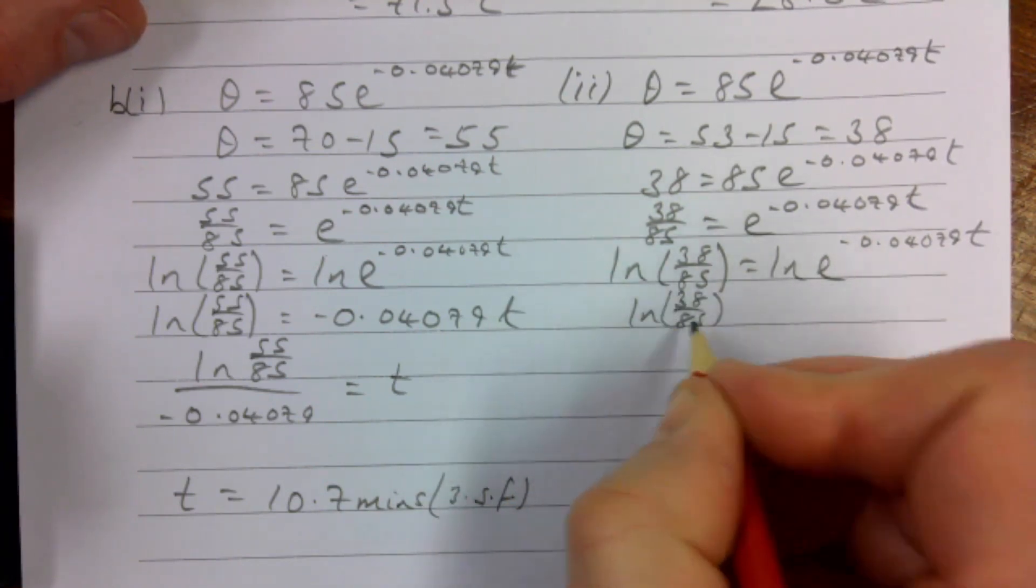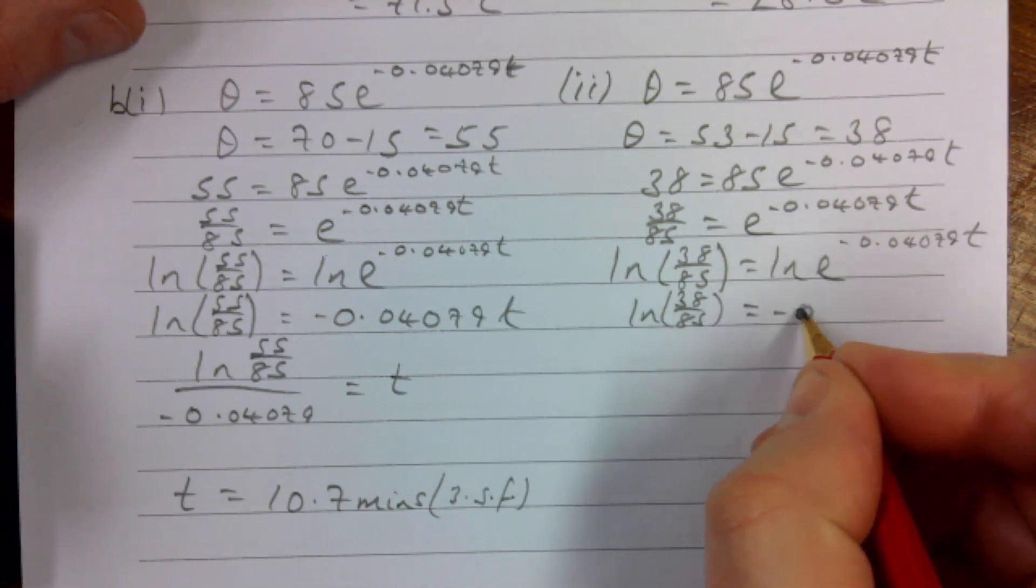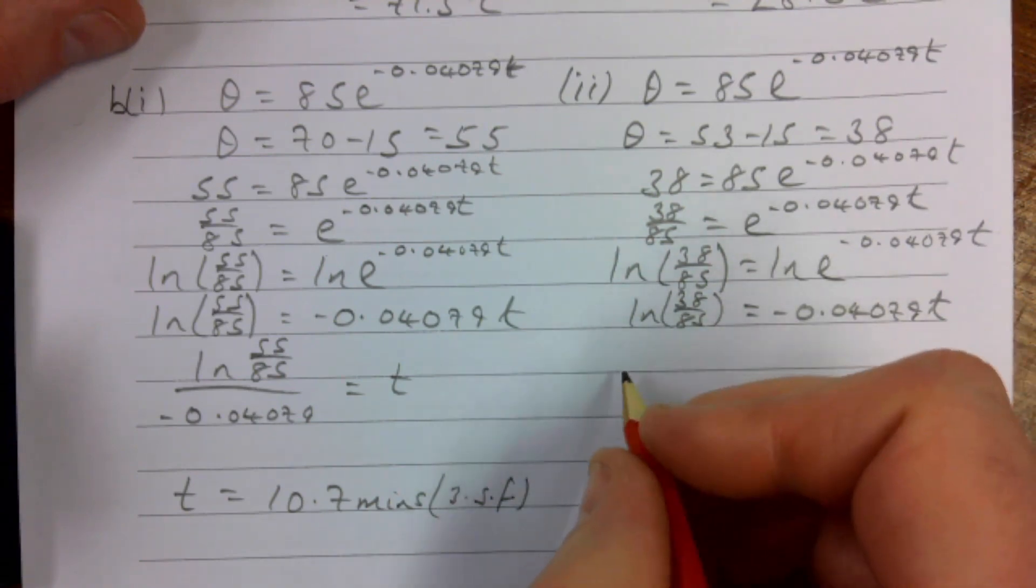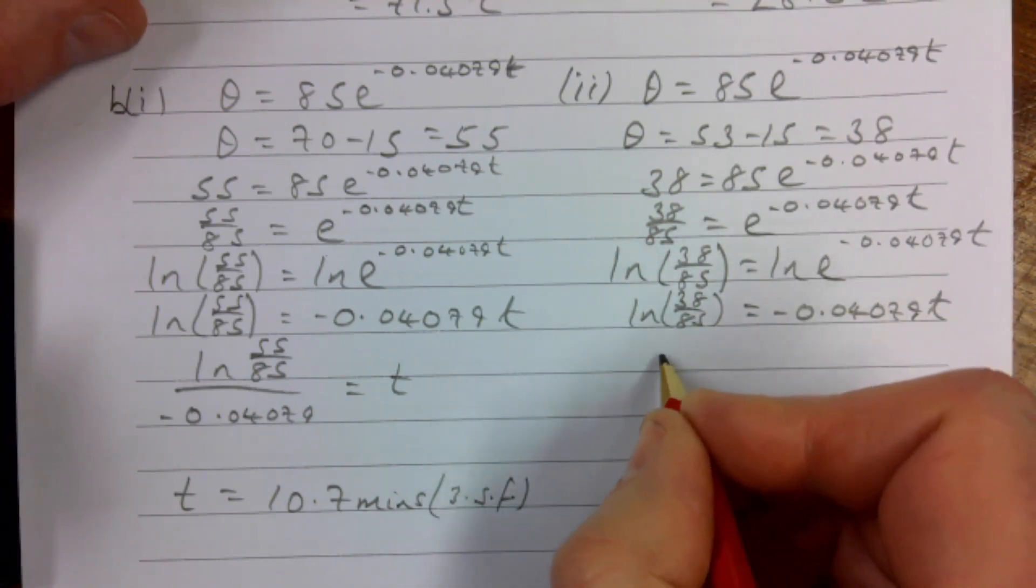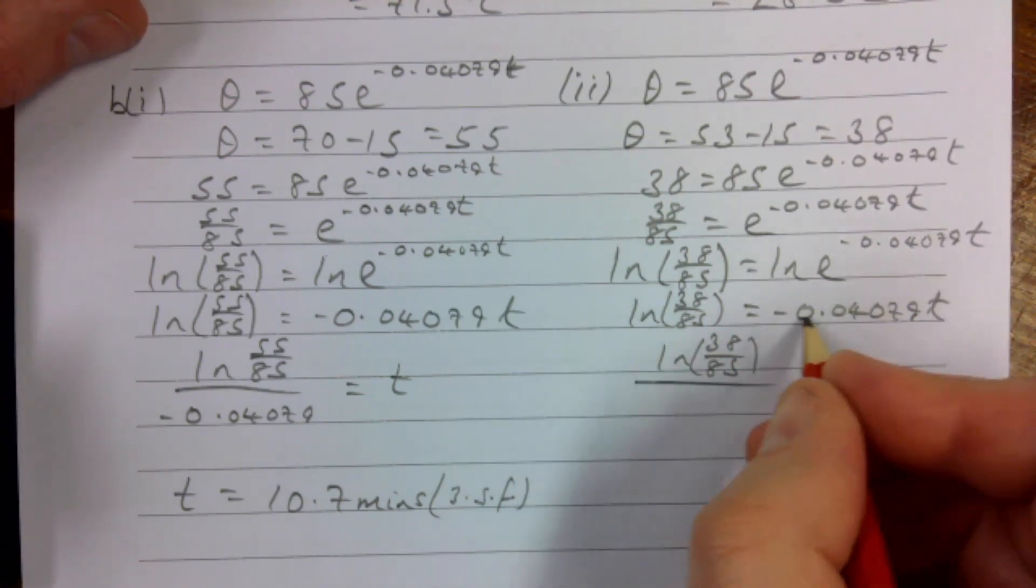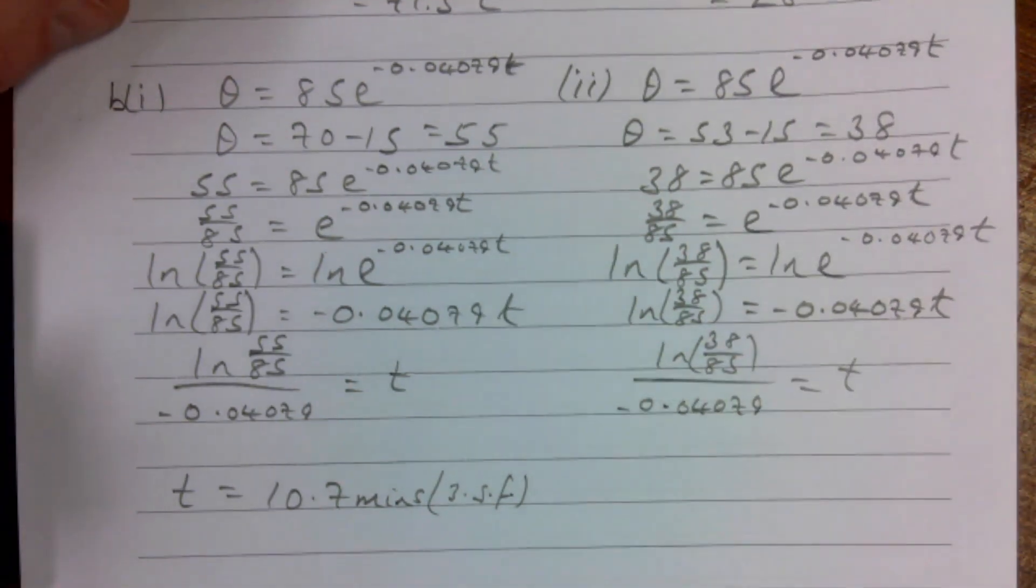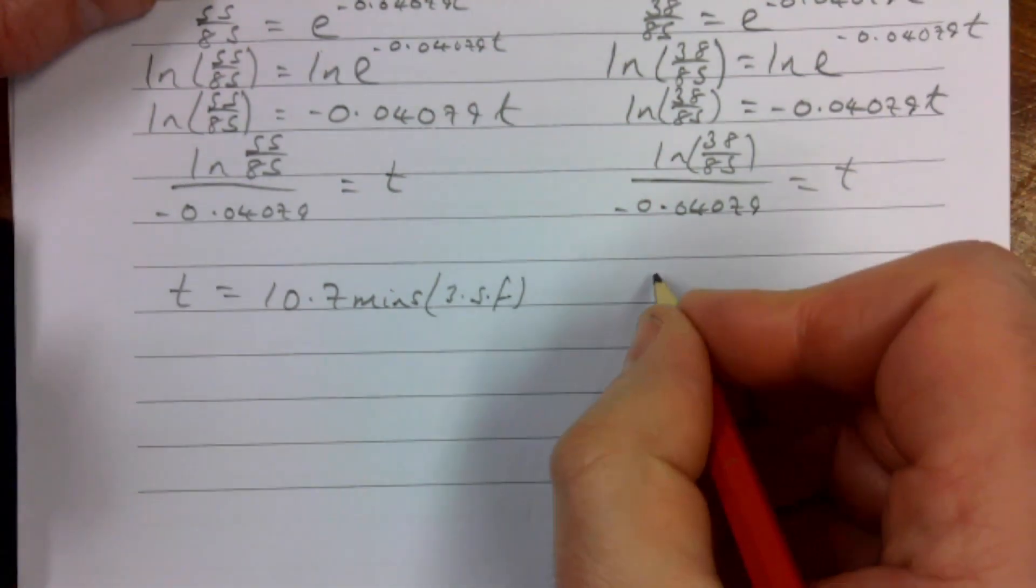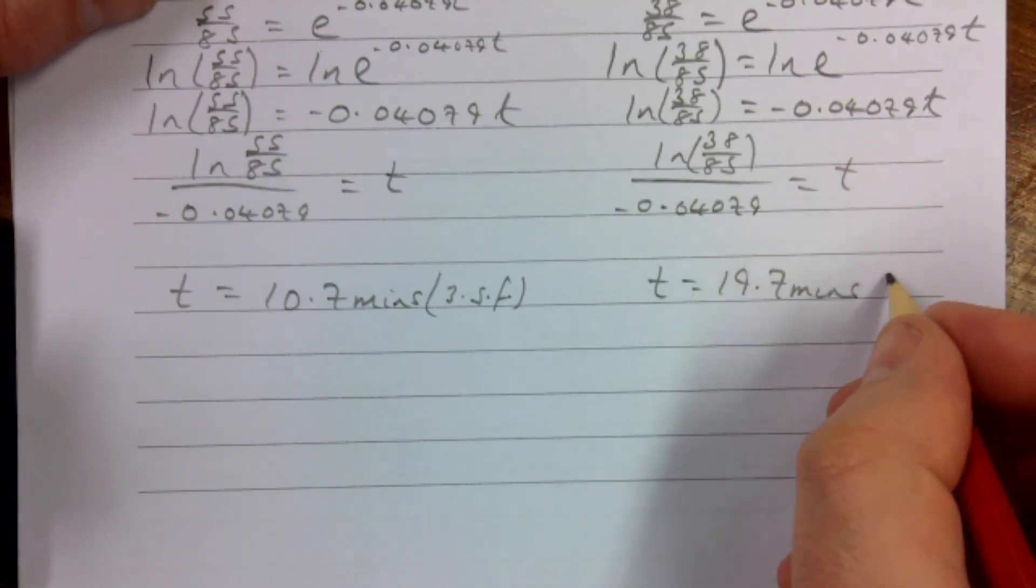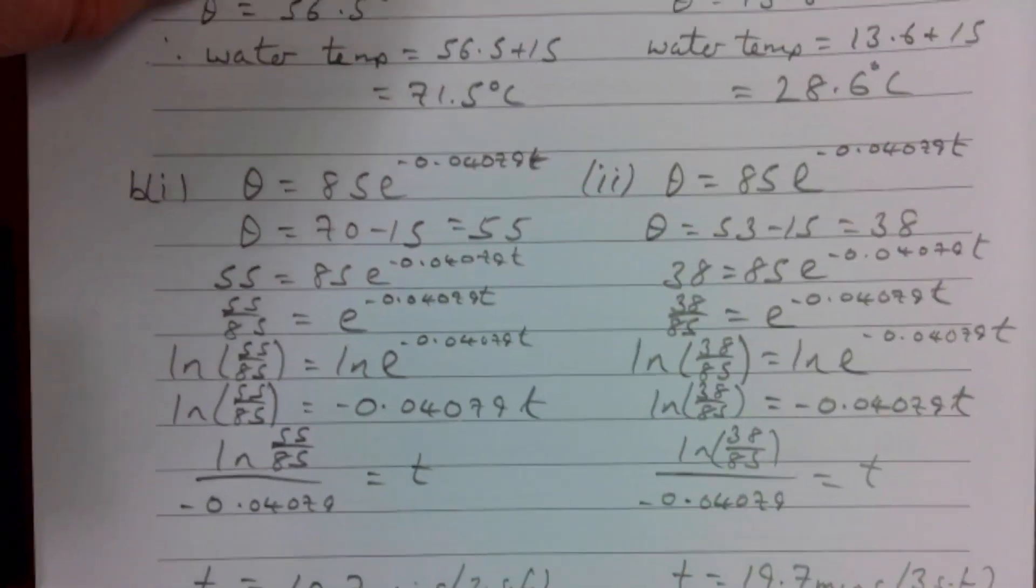Over 85. So what I'm going to do, I'm going to bring this part to the front and then the LN(e) will disappear. That's going to give me LN(38/85), and I'm going to divide that by -0.04079. That gives me t, and again putting it into my calculator I'm going to get 19.7 minutes. Again that is to 3 significant figures and we're finally there.